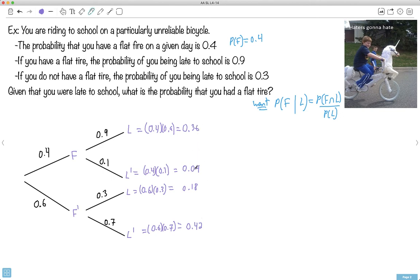And notice 0.36 plus 0.04, that adds up to 0.40. 0.04 plus 0.18 plus 0.42, that adds up to 0.6. That equals 1, so we're fine.